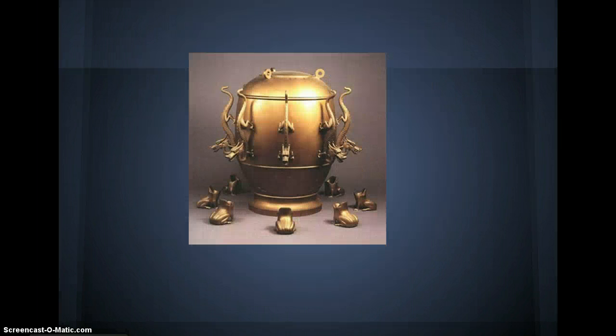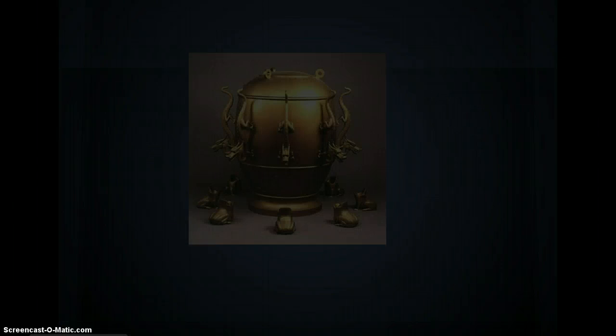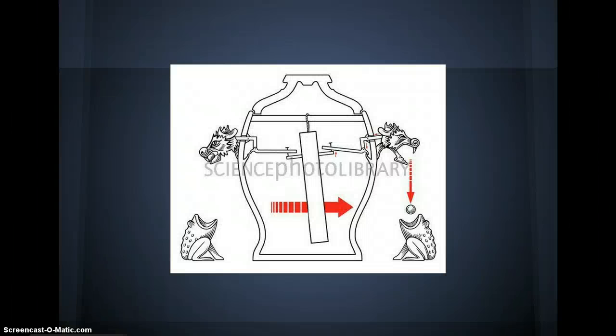The earliest recorded device to record earthquakes was in 132 AD by Zhang Heng. His seismoscope showed the directions earthquakes were coming from. It was a cylinder with dragon heads on all sides.